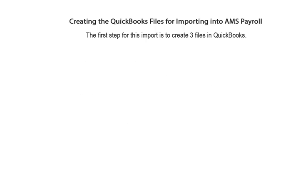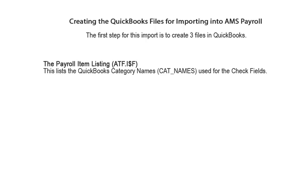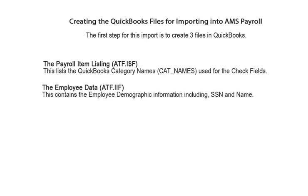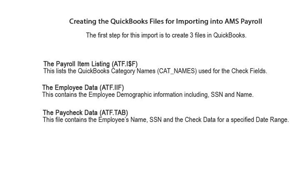In QuickBooks, you will need to create three files. Each file will contain different data. First is the ATF.I$ONF file for the payroll item listing or the check field names. Second is the employee data file named the ATF.IIF file, which contains the employee demographic information including the employee name and social security number. The third file will contain the paycheck information, named ATF.TAB. It includes the employee name, social security number, and the check data for a specific date range.